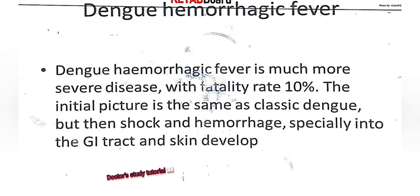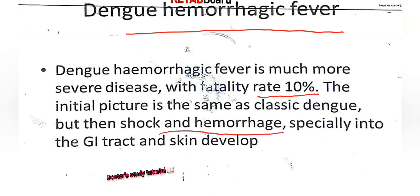The most important topic for viva is dengue hemorrhagic fever. Dengue hemorrhagic fever is a much more severe disease with a fatality rate of 10%. The initial picture is the same as classic dengue, but then shock and hemorrhage — especially into the GI tract and skin — develop.